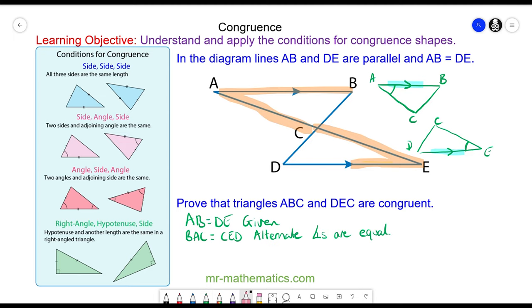Similarly, we can use the same angle property with ABC, which is this angle here, and CDE, because again they are alternate, so they will also be equal.